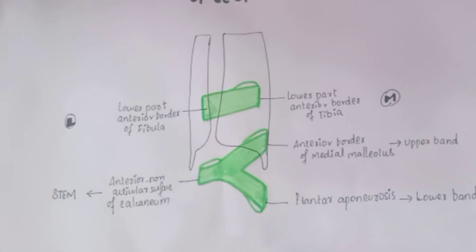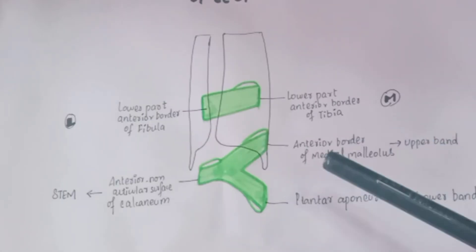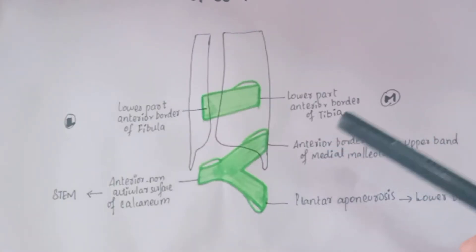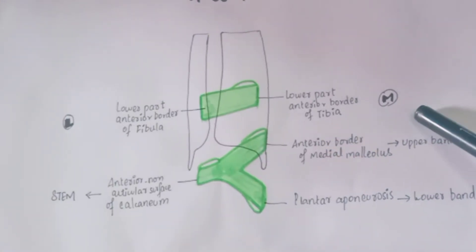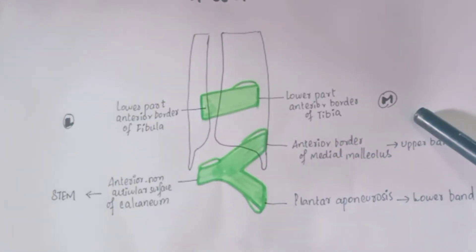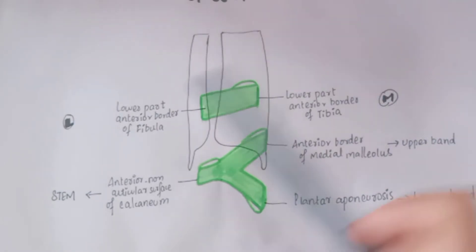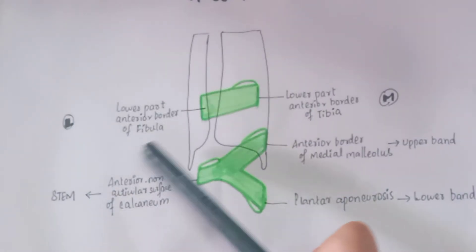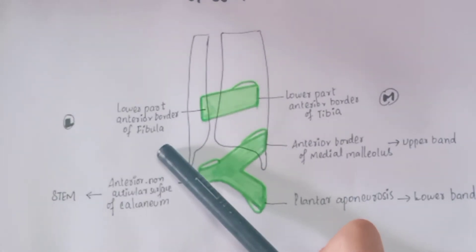The superior extensor retinacula is attached medially to the lower part of the anterior border of the tibia, and laterally to the lower part of the anterior border of the fibula.